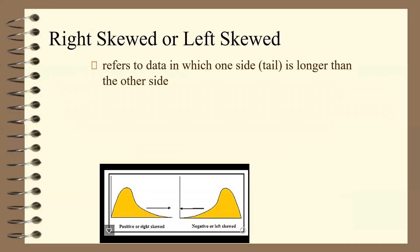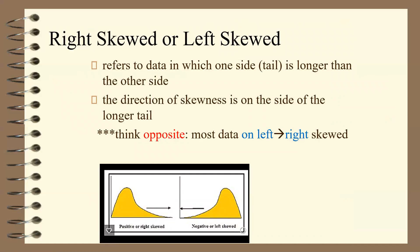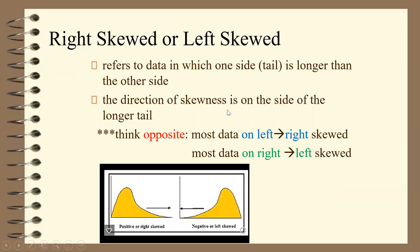Right skewed or left skewed refers to data in which one side — the tail — is longer than the other. The direction of skewness is on the side of the longer tail. A helpful tip: think opposite. If most of the data is on the left, it is right skewed; if most of the data is on the right, it is left skewed. This is because if most data is on the left, the mean is being pulled right, and if most data is on the right, the average is being pulled left by those lower values.